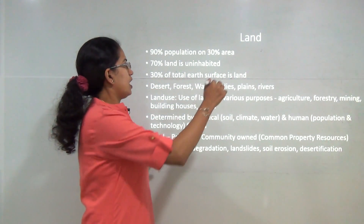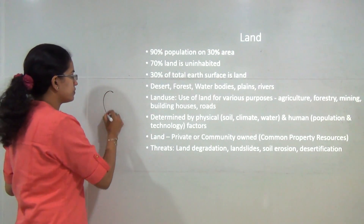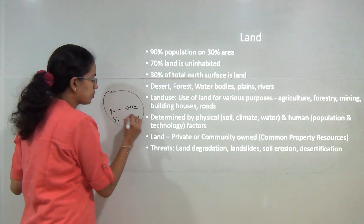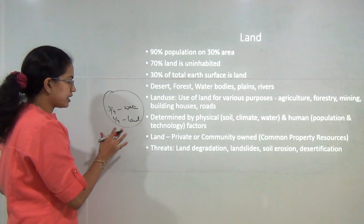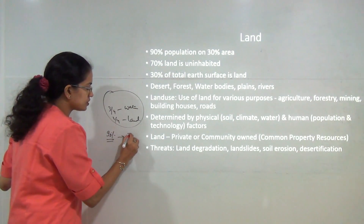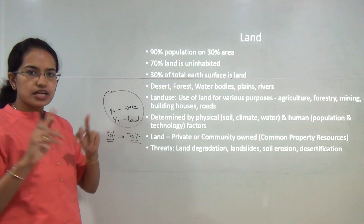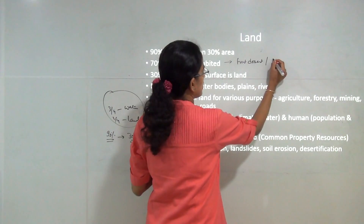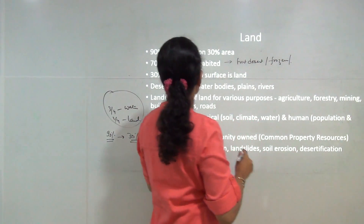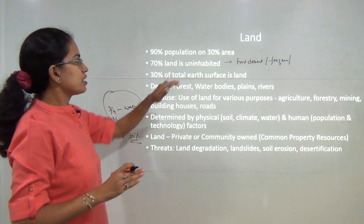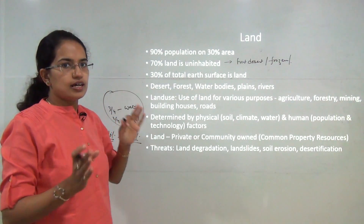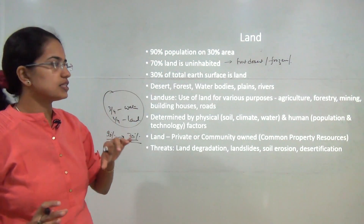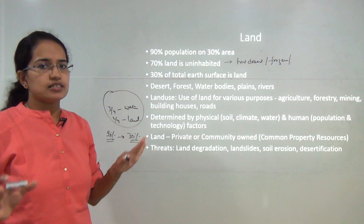The first resource we will talk about is land. On the globe, three-fourths is water and only one-fourth of the total area is land. Of this one-fourth land area, 90 percent of the population lives on only 30 percent of it. The remaining 70 percent is uninhabited - either very hot deserts, frozen lands, or the Antarctic ice sheet.